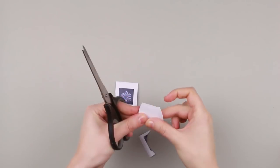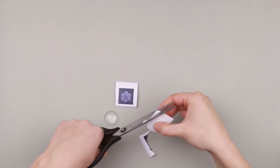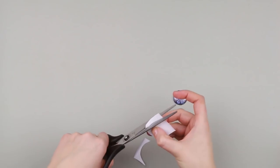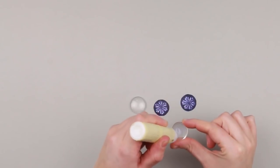Cut off the excess around the lenses. Do the same to the other earring. Put some glue carefully onto the lenses.